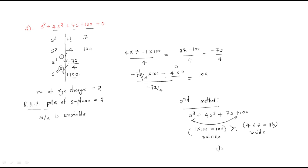The outside product is much greater than the inside product, so we can directly say the system is unstable. The stability of a system means it has a bounded output when supplied with a bounded input, and stability analyzes the steady state of the system.